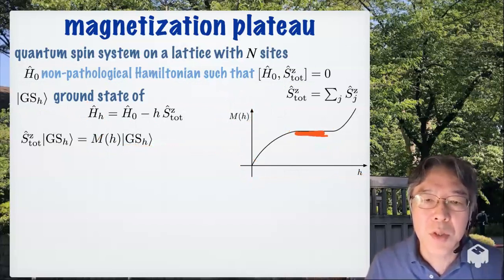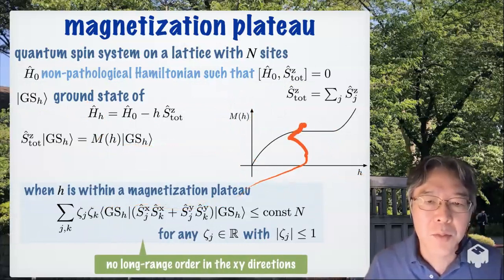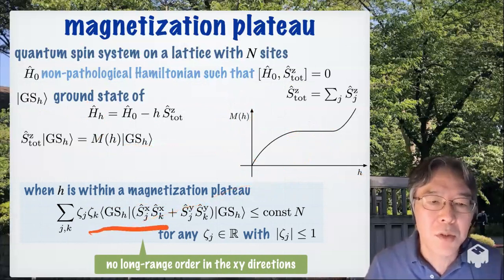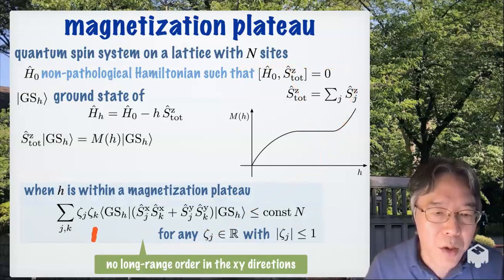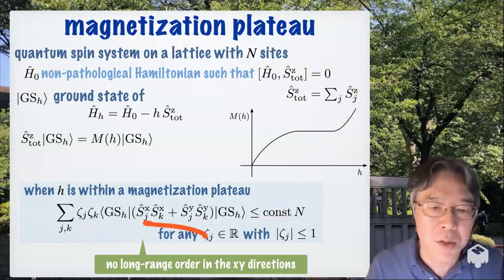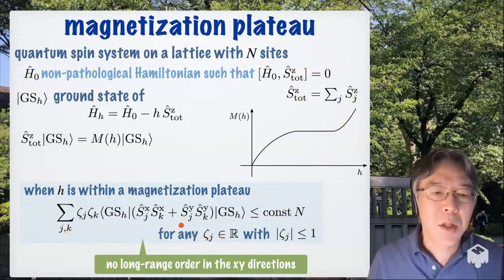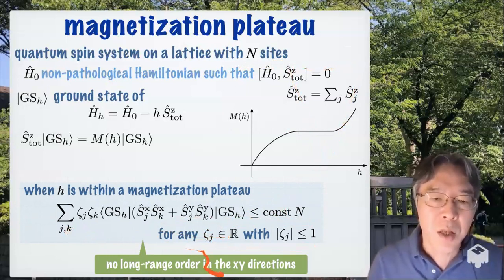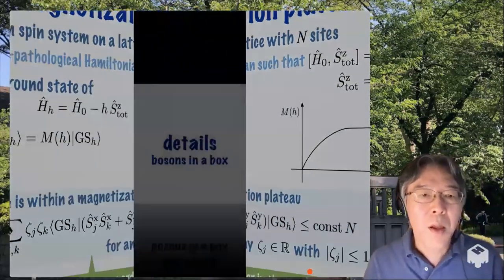Then this is our theorem. When H is within a magnetization plateau like this, then the sum of this correlation function is always bounded from above by constant times N. N is the number of sites. And here, look, here you have N squared terms in the sum. But I say that it's bounded from above by constant times N. This means that the correlation here is short-range. Here, theta_j is an arbitrary constant. So this implies that there is no long-range order in the ground state in the xy direction. So the direction transverse to the magnetic field.